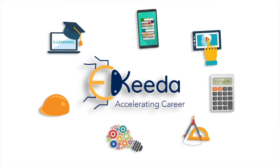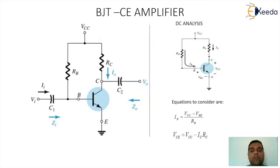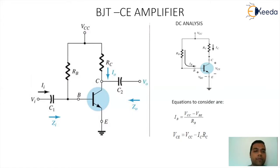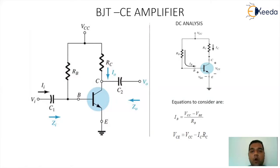Here we are talking about BJT common emitter amplifier. If you can see the left hand side figure carefully, we're having a BJT common emitter amplifier with fixed biased arrangement. The top voltage is VCC, the input side resistance is RB, the resistance for the collector is RC, the two coupling capacitors involved are C1 and C2, and the emitter terminal is shorted to ground. We are giving the input to the base of the transistor with the help of coupling capacitor C1 on the input side and taking output from the collector with the help of coupling capacitor C2. So this is a common emitter configuration.